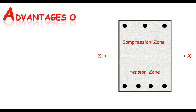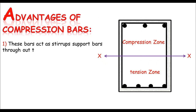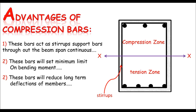What are the merits of providing bars in the compression zone? First, these bars act like stirrup supports — they support the shear reinforcement. Second, these bars can set a minimum limit on bending moment. Also, these bars will reduce the long-term deflection of the member. So these are a few advantages of compression bars.